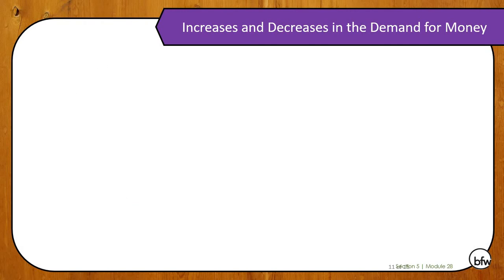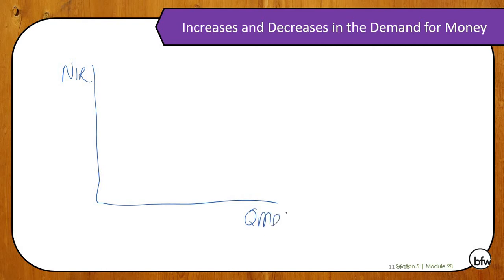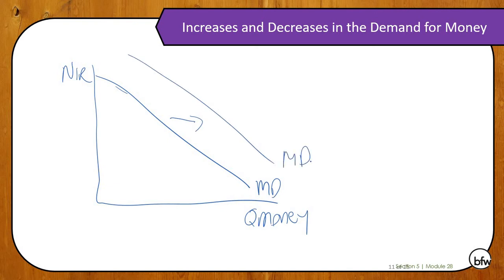Now, increases and decreases in the demand for money. Just like in our supply and demand graph, if the demand for money increases, that'll be a shift to the right. And if the demand for money decreases, that will be a shift to the left.